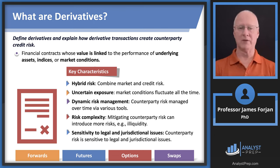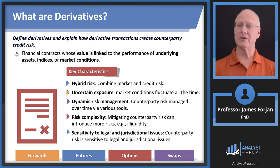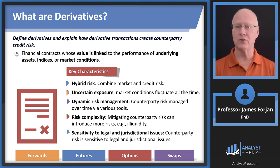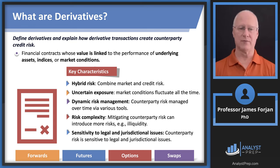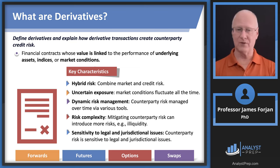You guys know this from previous conversations. Down at the bottom there's a forward contract — that was the example between Betty and me for the chocolate chip cookies. But if they're standardized and traded on an organized exchange, that's what a futures contract is. Futures contracts are nothing more than standardized forward contracts. Swap contracts are mostly over-the-counter, and a swap contract is really nothing more than a series of consecutive forward contracts.